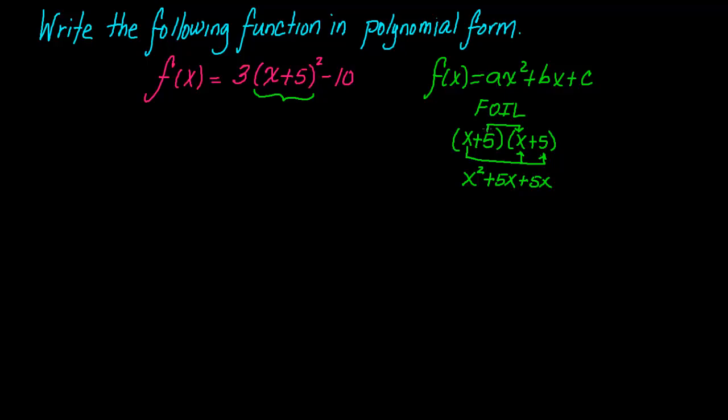And last, you take your term with the last term, and that gives you 25. Notice that you have like terms, which we can combine to simplify this further. You get x squared plus 10x plus 25.